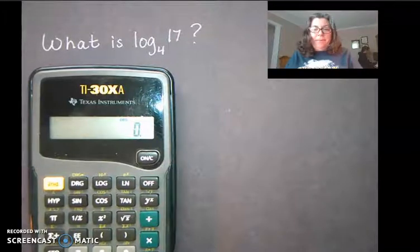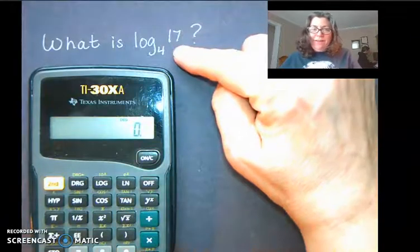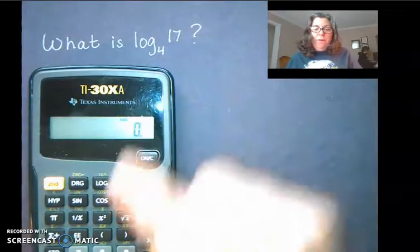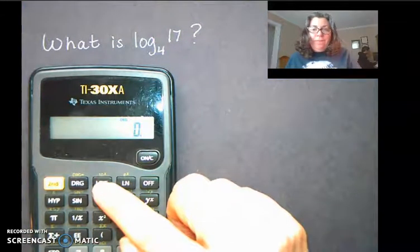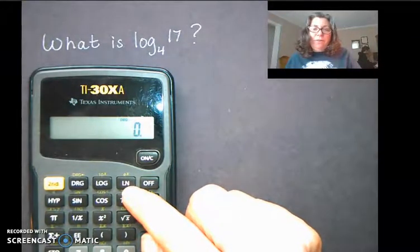Here is the dilemma. We get questions like this and we go to our calculator and we only have the log key, which is base 10, and the ln, the natural log, which is the natural base e.